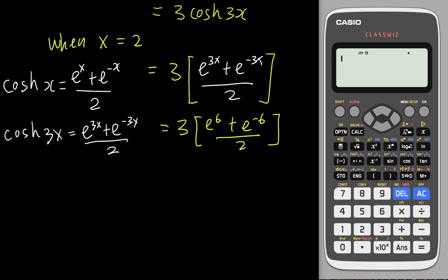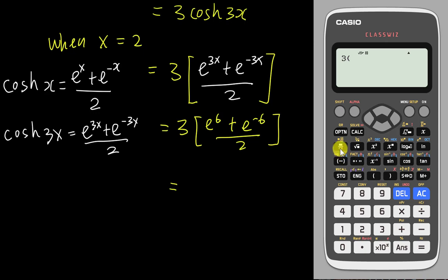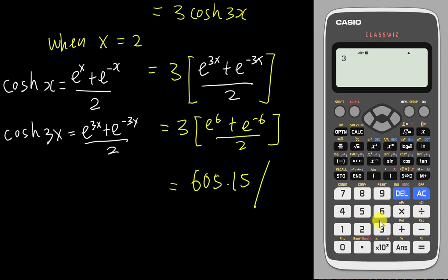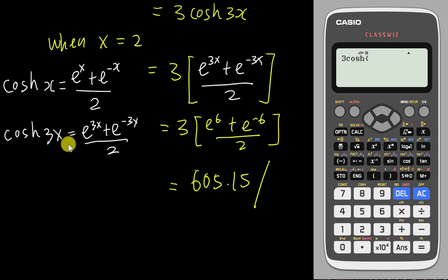Typing it manually: open brackets, fraction, e to the power of 6 plus e to the power of negative 6, divided by 2 — the calculator gives 605.15. Alternatively, you can type 3, go to the option for hyperbolic functions, choose hyperbolic cosine (number 2), then type 3 times 2 which is 6, and you get the same answer: 605.15.